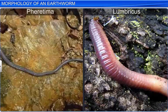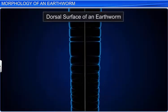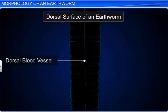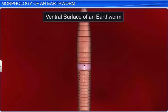The body of an earthworm can be dorsal-ventrally differentiated. The dorsal surface has a dorsal blood vessel that runs longitudinally along the body, while the ventral surface has genital openings or pores.